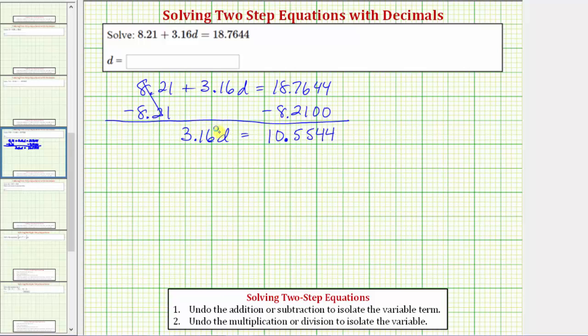The second step is to multiply or divide in order to solve for the variable d. And again, because 3.16d means 3.16 times d, to undo multiplying by 3.16, our second step is to divide both sides by 3.16.